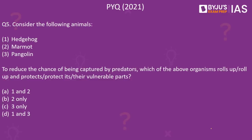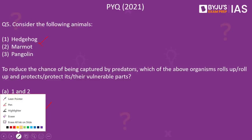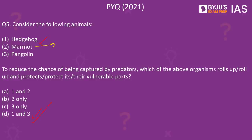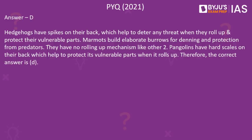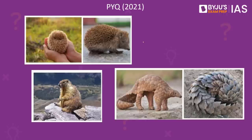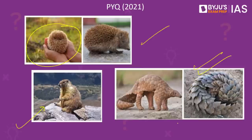Next is a previous year question from 2021. Consider the following animals: hedgehog, marmot, and pangolin. To reduce the chance of being captured by predators, which of these organisms roll up and protect their vulnerable parts? The correct answer is D — hedgehog and pangolin are the animals that have this tendency of rolling up. Marmot is from the squirrel family and is considered the heaviest among them; it does not have this rolling-up tendency. Photos are shown: the hedgehog can be seen rolled up in a protection state, and pangolin is also shown — it is considered a very exotic species and is unfortunately hunted in many parts of the world.